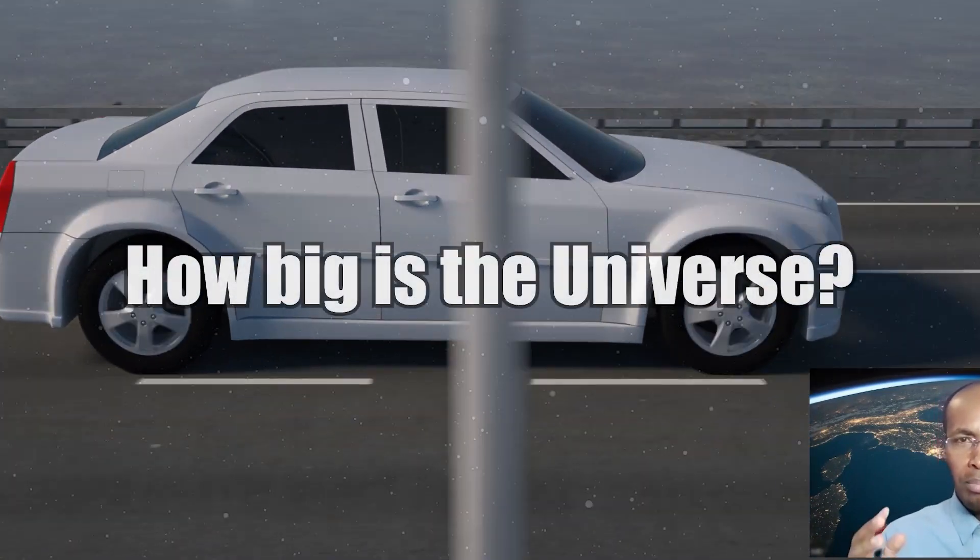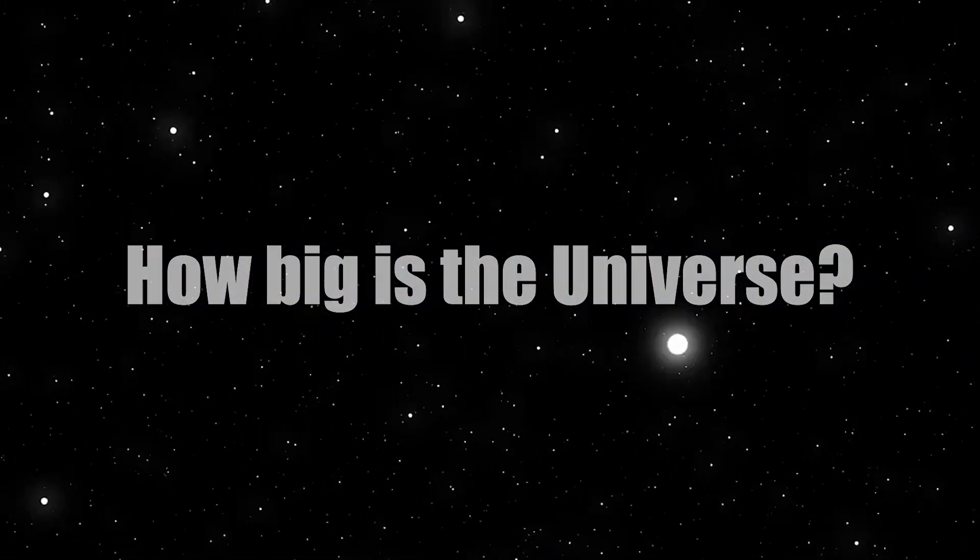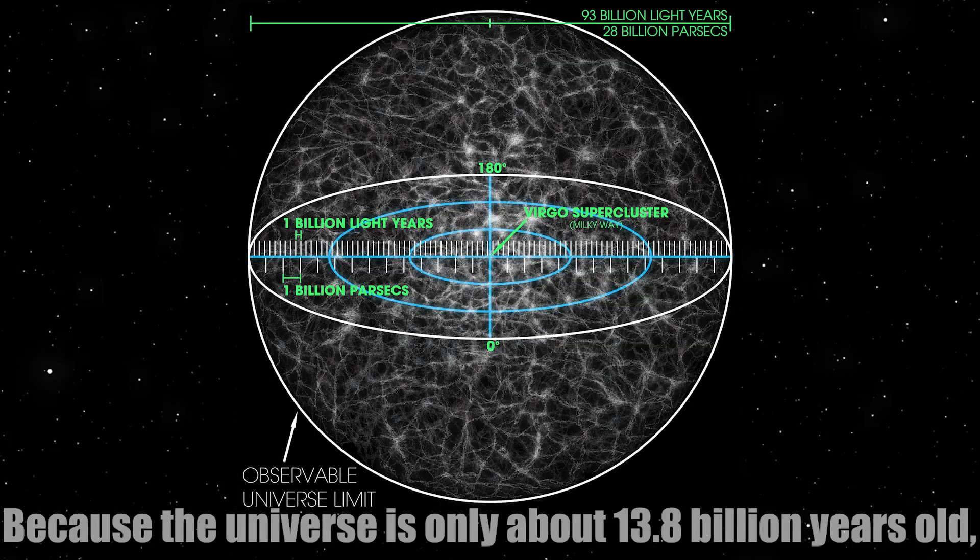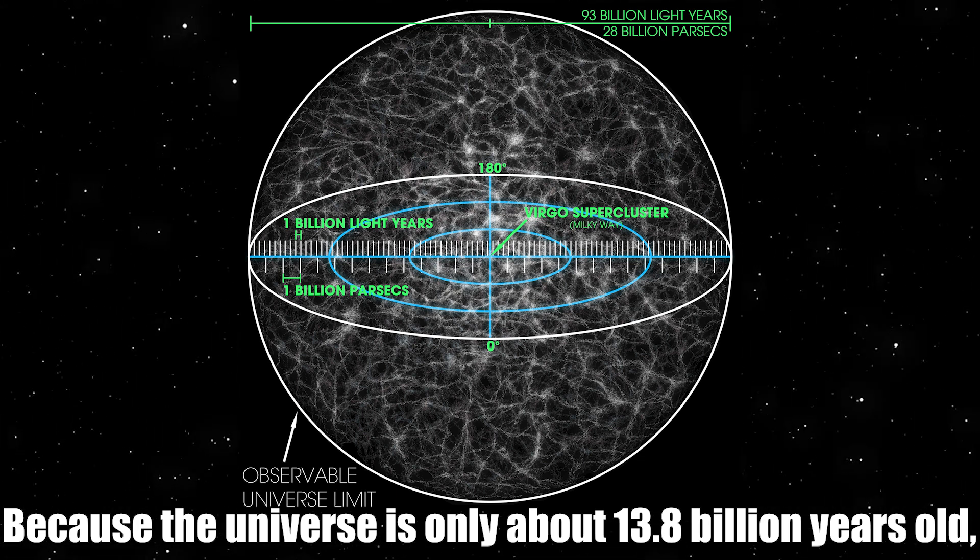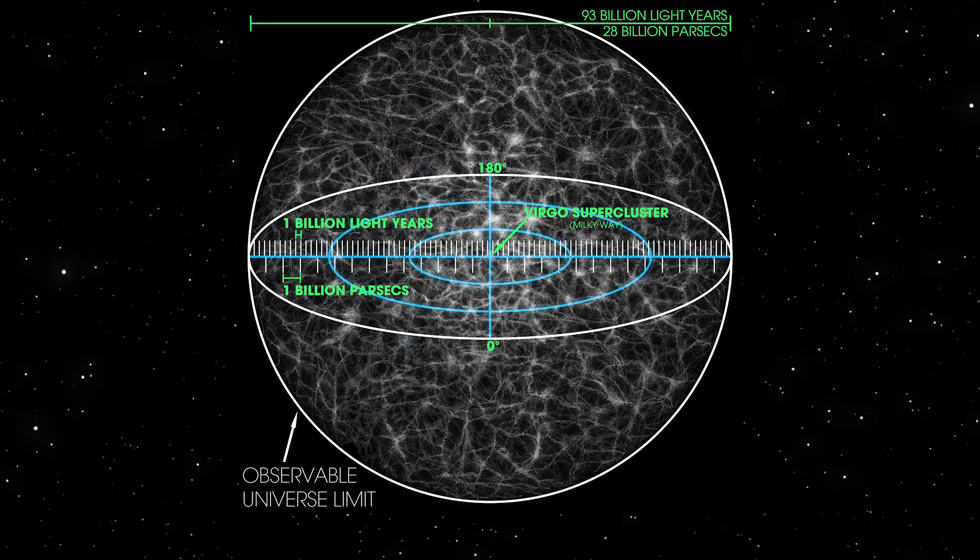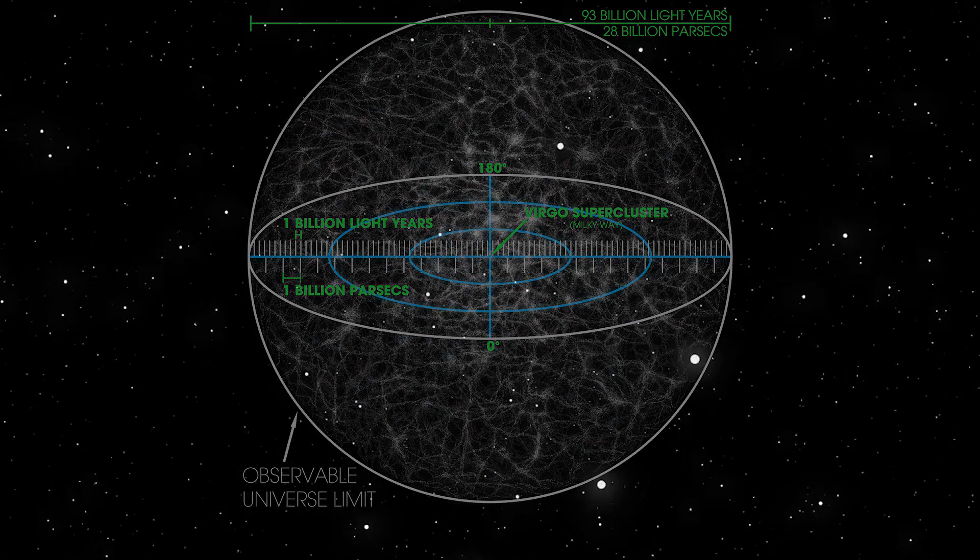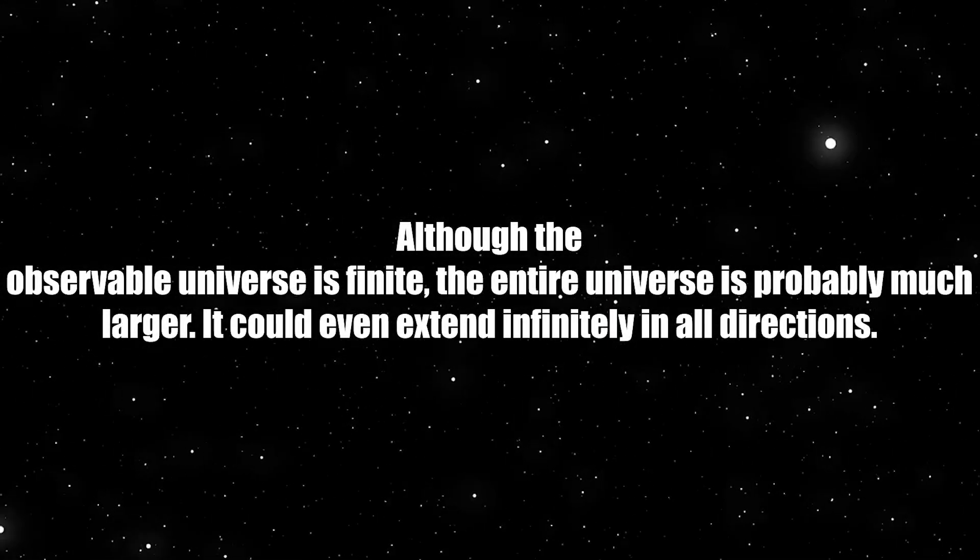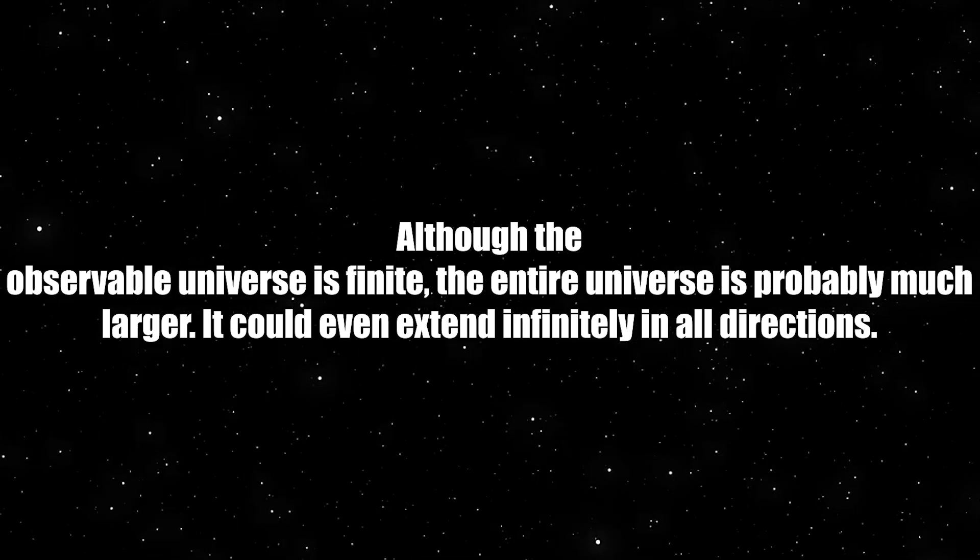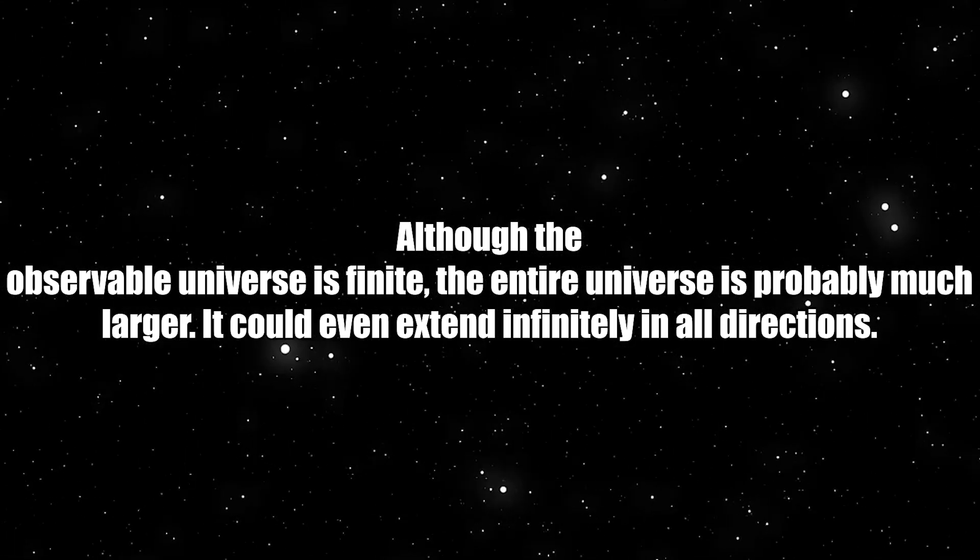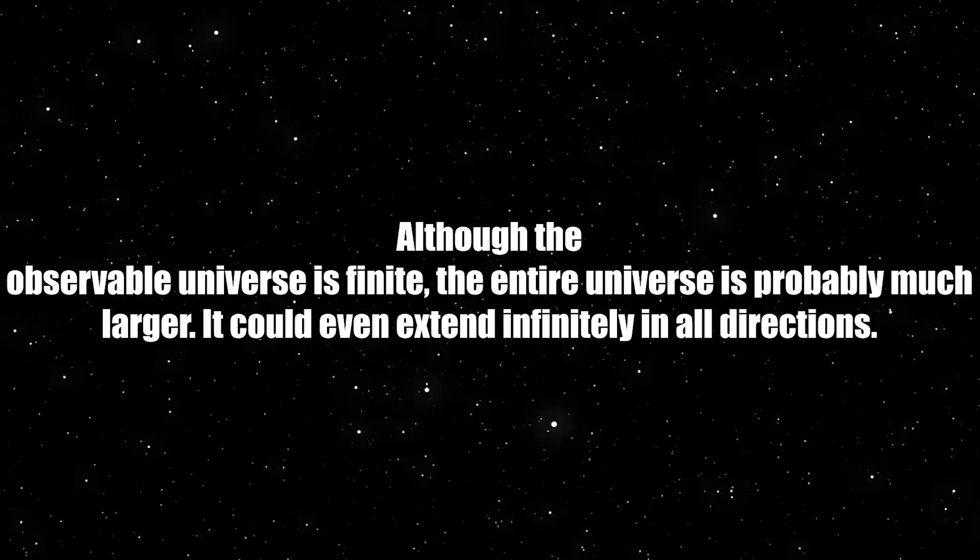Next question, how big is the universe? We can observe only a portion of the entire universe because the universe is only about 13.8 billion years old. Light has only had about 13.8 billion years to travel through it. Although the observable universe is finite, the entire universe is probably much larger. It could even extend indefinitely in all directions.